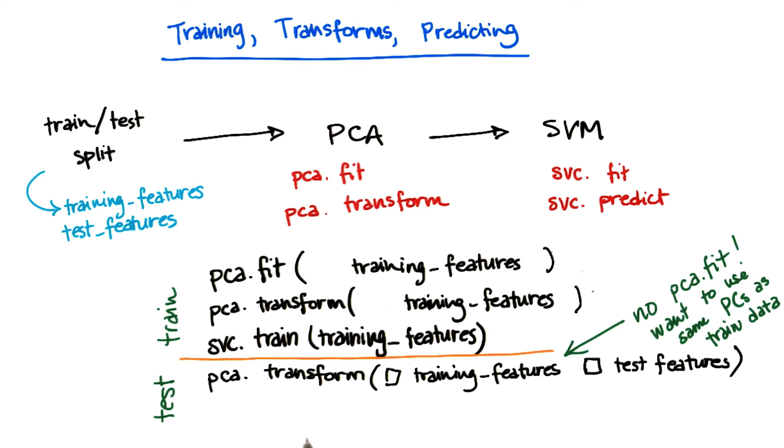So that having been said, when I call PCA.transform, do I want to be doing it on the training features or on the testing features?